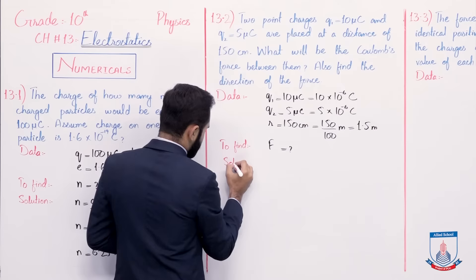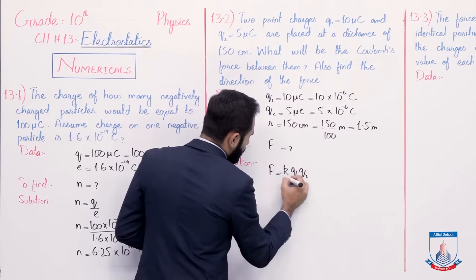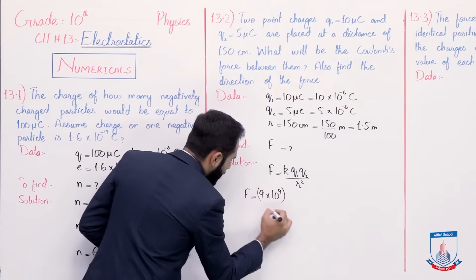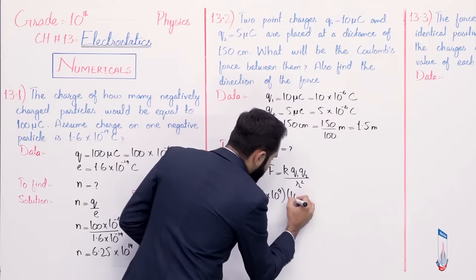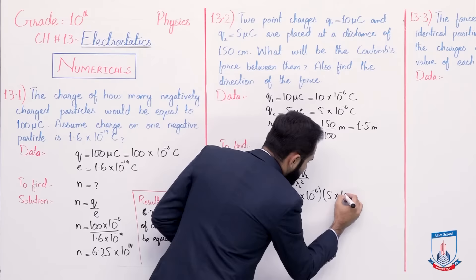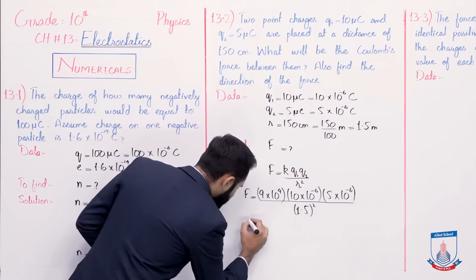As we know, according to Coulomb's formula, f is equals to k q1 q2 divided by r squared. So putting the values in the formula: f is equals to k ki value hai 9 multiplied by 10 raise to the power 9, q1 that is 10 multiplied by 10 raise to the power minus 6, and q2 is 5 multiplied by 10 raise to the power minus 6, divided by r square, so r hai 1.5, iska ho jayega square. Solving this value, answer aajayega 0.2 newton.